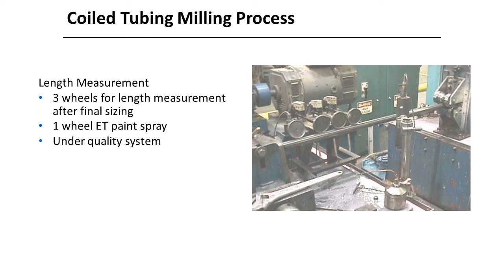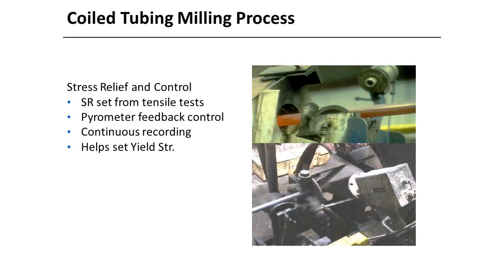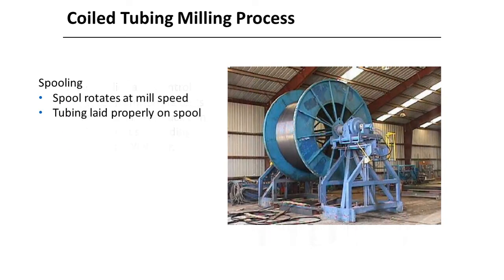Three-wheel counters are used for length measurements; if all agree within a few feet the average is used, otherwise the outlier counter is removed. A fourth wheel works in conjunction with eddy current inspection, providing the depth when a fault occurs and marking the pipe with paint. Previous tensile tests help set the correct temperature for stress relief, and an optical pyrometer automatically feeds into the control system for constant temperature control. Full body stress relief is typically 1100 to 1300 degrees Fahrenheit. Stress relief imparts desired mechanical properties on the steel. After the tubing has cooled, it is spooled onto storage or shipping drums.